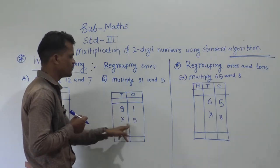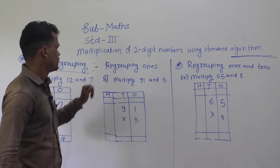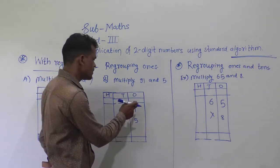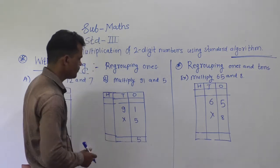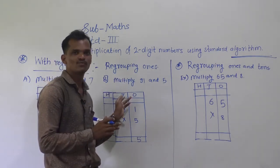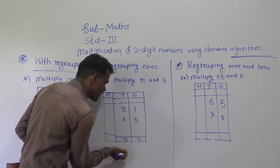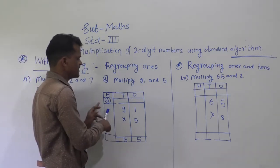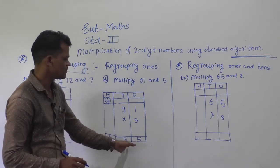Next example: multiply 91 and 5. Here we will regroup the tens plus digit. First multiply 1 by 5: 5 ones are 5 — write 5 here. Then 5 nines are 45. That is 45 tens, which means 4 hundreds and 5 tens. So, write 5 here and carry 4 forward to the hundreds place. Next, there is no digit in the hundreds place, so consider it 0. 5 into 0 is 0, and 0 plus 4 is 4. So, the answer is 455.